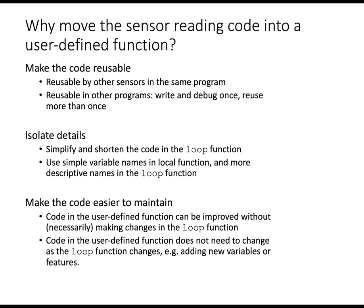Finally, that makes all the code easier to maintain. The code in the user-defined function can be improved without necessarily making any changes in the loop function. In other words, we can upgrade our measurement code. And similarly, code in the user-defined function doesn't need to know if something in the loop function changes. So we can make the loop function more complicated and it doesn't in any way interfere with the code in the user-defined function for measurements.